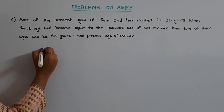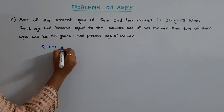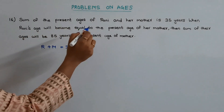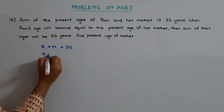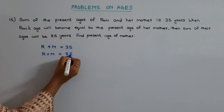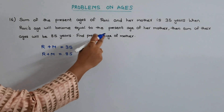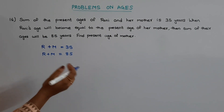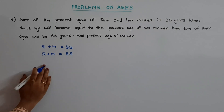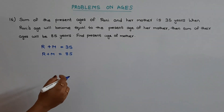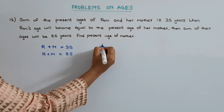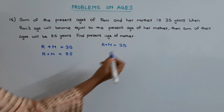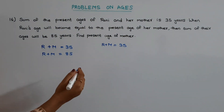In this question they have given the sum of the present ages of Rani and mother as 35 years. Then they are telling that when Rani's age will become equal to the present age of her mother, the sum of their ages is 85 years. We need to find out the present age of mother. There is a shortcut method to find out this answer in just two steps, but before going to the shortcut, let me explain the conventional method to solve the problem.